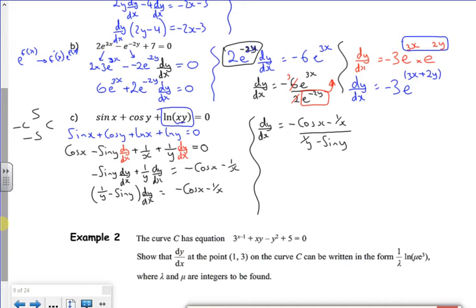Now you could combine the top as a single fraction and combine the bottom as a single fraction. So if you did that, that would be minus x cos x minus 1 over x. Divided by 1 minus y sine y over y. If I flip the bottom fraction, I've got minus x cos x minus 1 all times by y over 1 minus y sine y all times by x. That's probably going way too far.